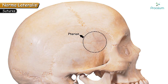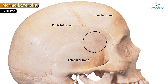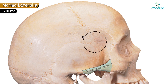Pterion is an H-shaped suture — a capital H-shaped suture having two vertical limbs and a horizontal limb — and it is formed by four bones. The four bones contributing to the formation of pterion are: frontal, parietal, temporal, and greater wing of sphenoid. These four bones join to form the pterion, which is located 4 cm above the zygomatic arch.